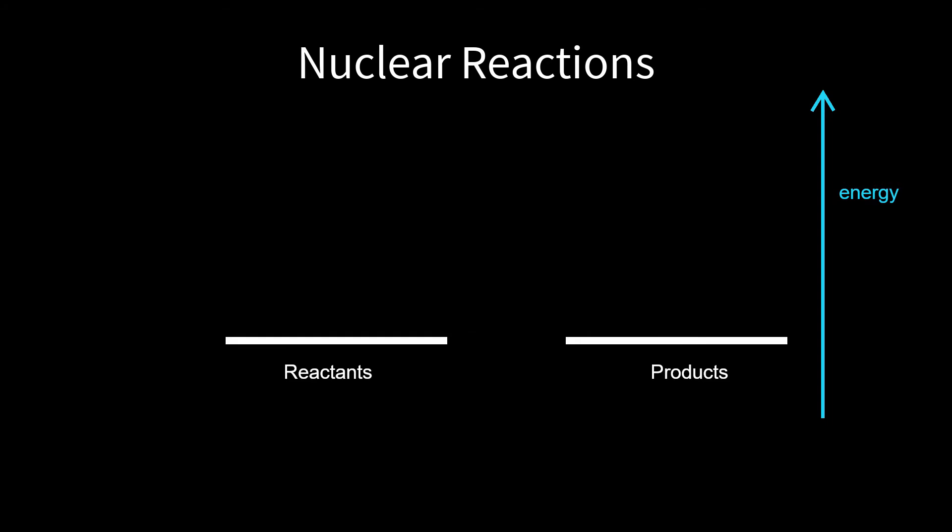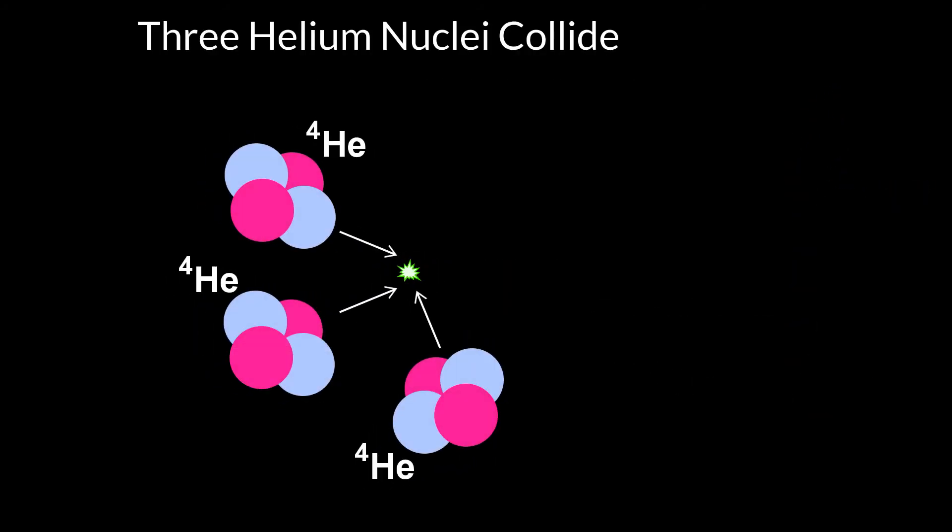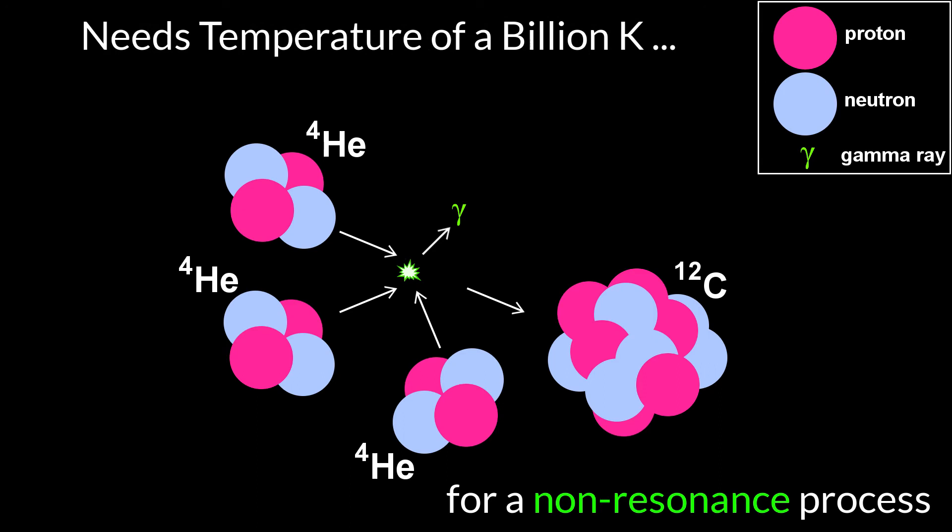The reaction's probability increases greatly when there's resonance. The energy level of the products needs to be a little higher than of the reactants because the kinetic energy needs to go somewhere. Now, back to Hans Bethe's problem. The universe shouldn't have much carbon because its non-resonance formation from three alpha particles needs a temperature of a billion Kelvin.